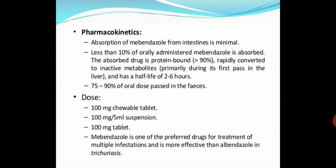Coming to the pharmacokinetic parameters of mebendazole: it can be absorbed from the small intestine, but generally minimal — less than 10% of orally administered mebendazole is absorbed. The absorbed drug is protein-bound with higher than 90% binding, and it is rapidly converted into inactive metabolites undergoing first-pass metabolism, leading to a half-life of two to six hours. 75 to 90% of oral drug generally passes into the feces, so the major disadvantage is that remaining 90% is excreted in unchanged form.